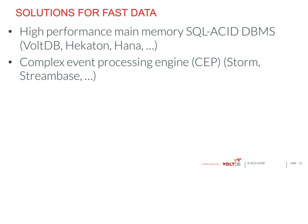In my opinion, there are two solutions that make much better sense. The first is to run a high-performance main memory SQL ACID DBMS. VoltDB sells one; Hekaton, which is part of SQL Server 14, is another exemplar; and SAP HANA is moving in a similar direction. The second option is a complex event processing system, or CEP — Storm is probably the most popular one these days, and StreamBase is another exemplar. Those are the two games in town.